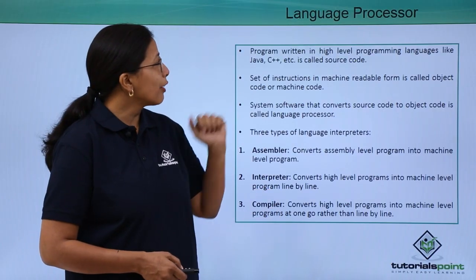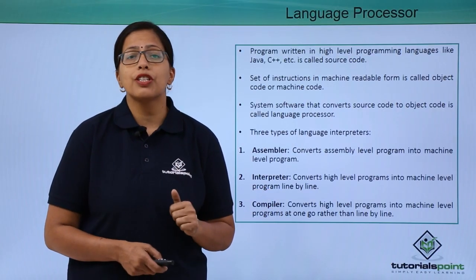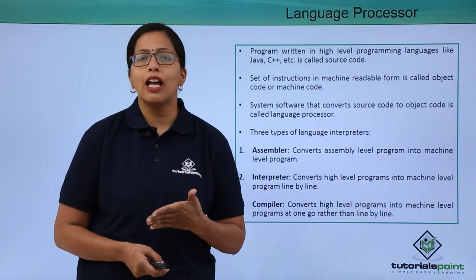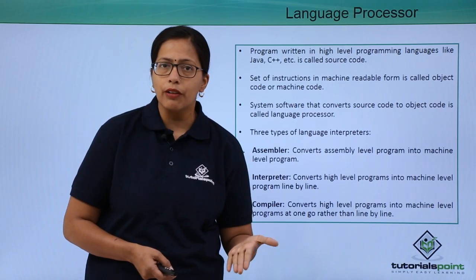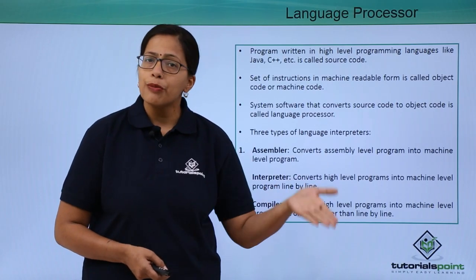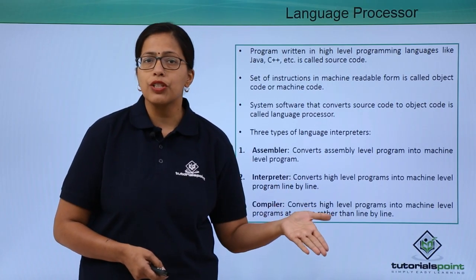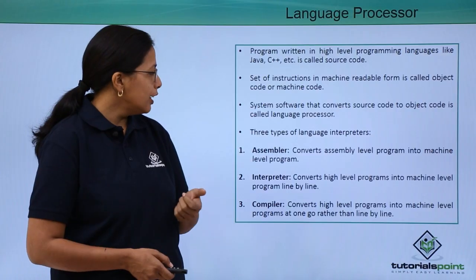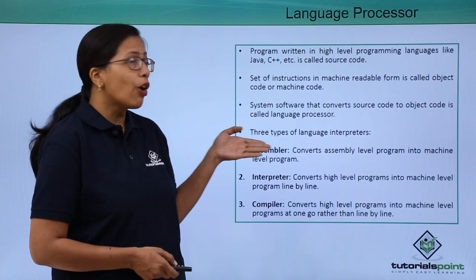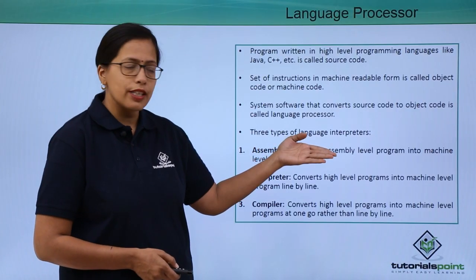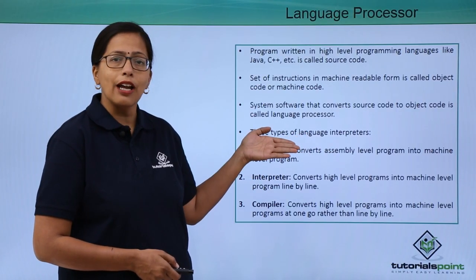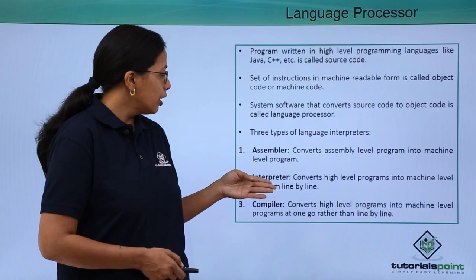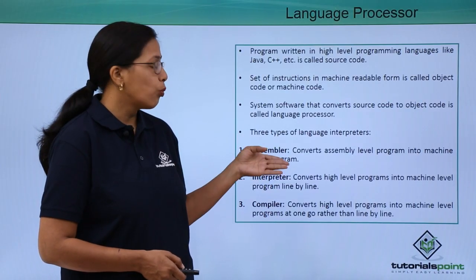What does a language processor do? A language processor will convert a high level language into an assembly level language or a machine level language that the computer can understand easily. For this processing, there are three types: assembler, interpreter, and compiler.